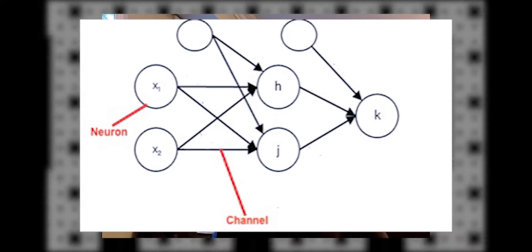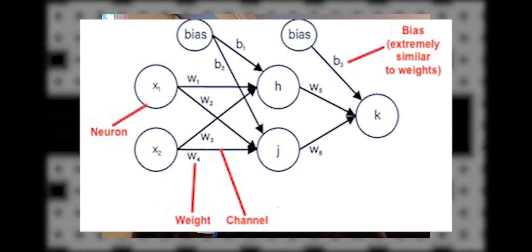Those lines, which are called channels, each have corresponding numbers called weights that are multiplied with the number being sent along. Each channel has a unique weight. As you'll see later, these weights are the key to a neural network's decision-making process.